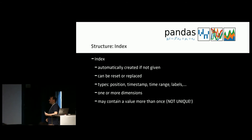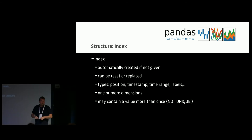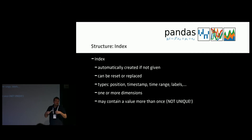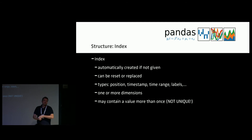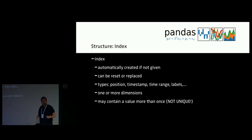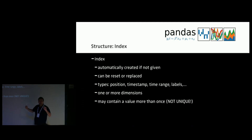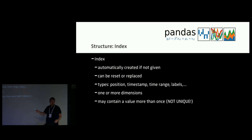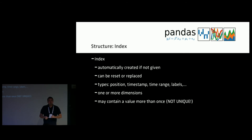Let's look a little deeper into the index. It's created automatically, it can be set, and it can be reset. There's a big caveat: coming from a database background, I think of an index as unique values. But in Pandas, an index may contain the same value multiple times — it's not unique by default. You can make it unique, but just be aware that it might not be.